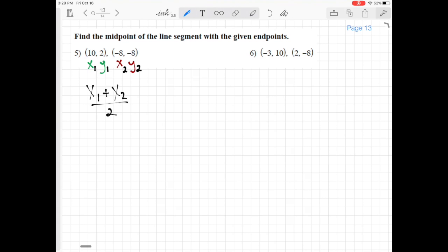Let's plug in what we know. Our x1 is 10, and our x2 is negative 8. We're going to add those together and divide by 2. So 10 plus negative 8 gives us 2.